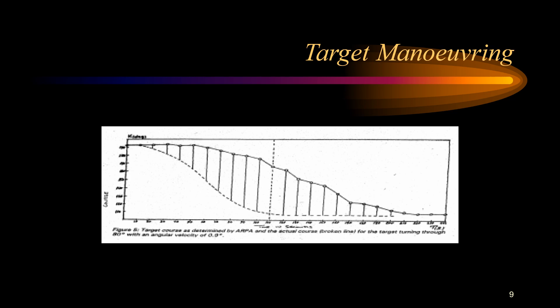Manual acquisition can be used to re-acquire the target if necessary. When own ship takes avoiding action, the relative motion of the targets becomes a curve and the vector will indicate only the mean track prediction. Course and speed inputs will also vary from actual values during the maneuver. Operators must not try to interpret tracked target information during a maneuver — the ship must steady on a new course and speed for at least three minutes before using the information to assess risk of collision.